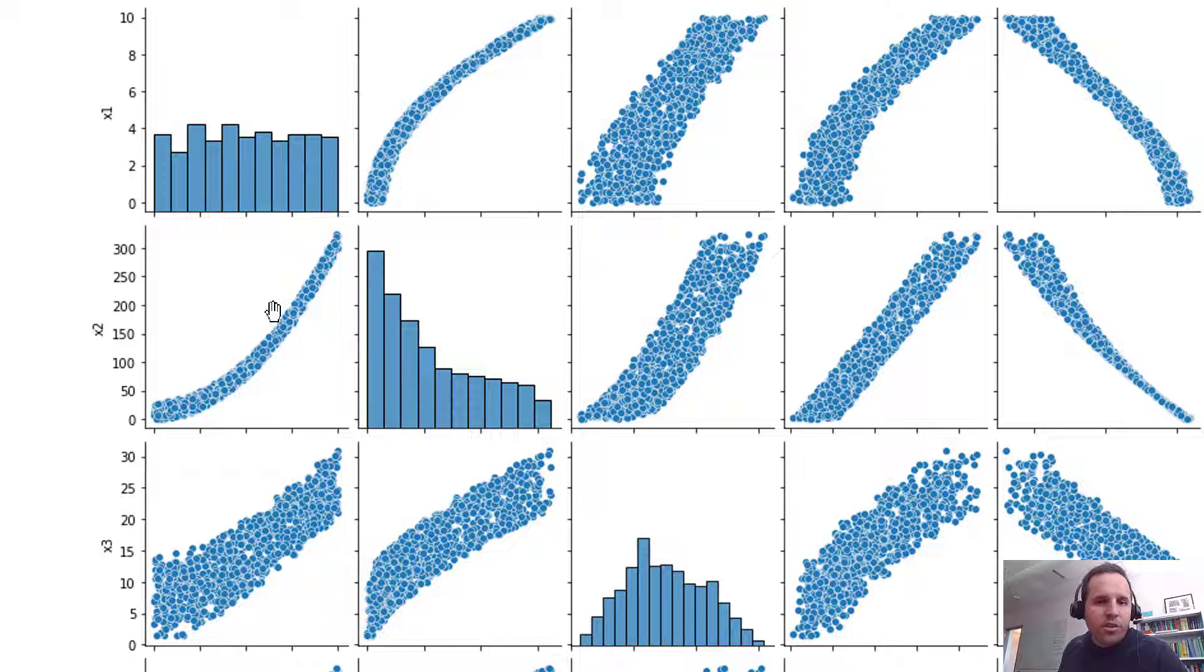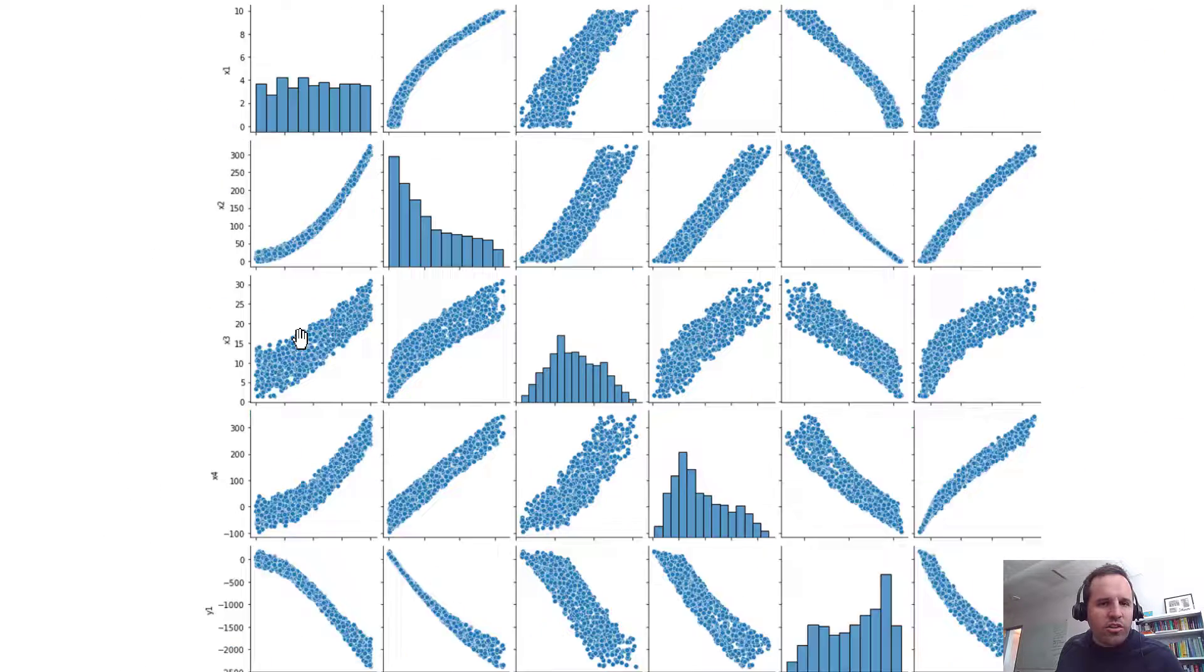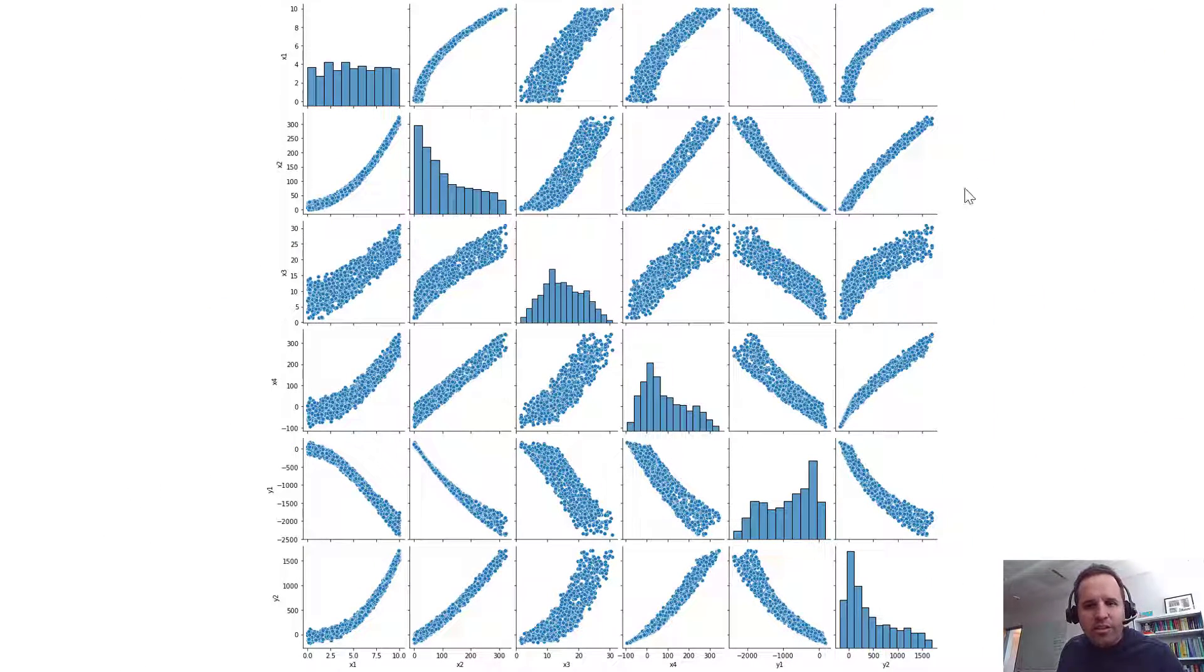And notice that these two plots, it's the same data. We've just swapped the axes. So you could really get all the information you needed by just looking at this upper diagonal part of it. It sort of depends on how you want to look at the data.